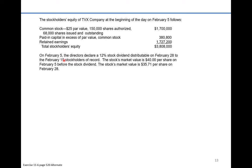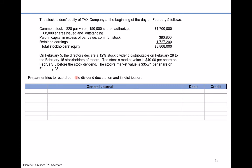On February the 5th, the directors declare a 12% stock dividend, distributable on February the 28th, to the February the 15th stockholders of record. Those dates are important: February the 5th, February the 28th, February the 15th. The stock market value is $40 per share on February the 5th before the stock dividend, and $35.71 per share on February the 28th. The problem asks us to prepare entries to record both the dividend declaration and its distribution.